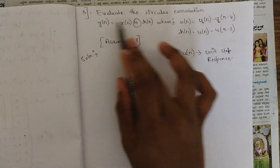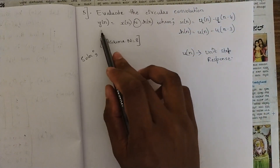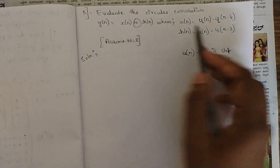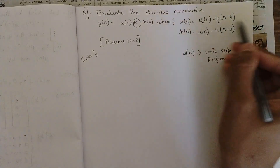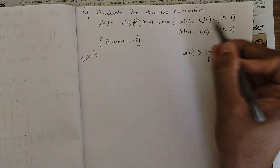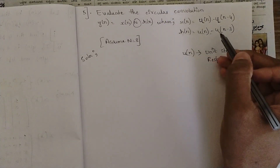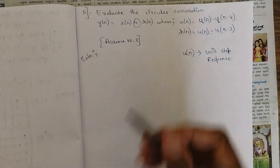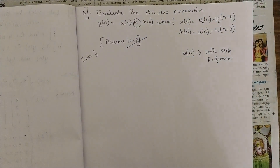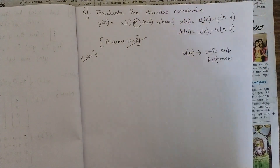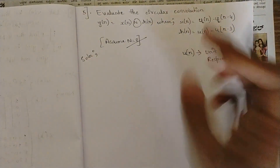Let's read the question: evaluate the circular convolution y(n) = x(n) ⊛ h(n), where they have given two sequences: x(n) = u(n) − u(n−4) and h(n) = u(n) − u(n−3). We should assume the length of both sequences as eight, so we need to convert these sequences into 8-point sequences.